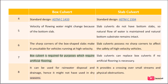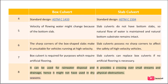Difference 7 — Flooring: Box culverts are required for purposes which need artificial flooring. Slab culverts can replace box culverts if no artificial flooring is necessary. Difference 8: Box culverts can be used for rainwater disposal and drainage. Slab culverts provide a crossing over small streams and physical obstructions.